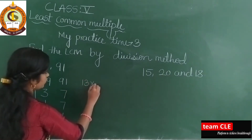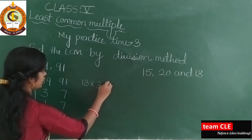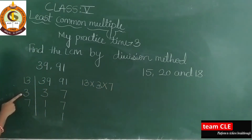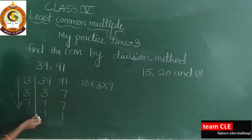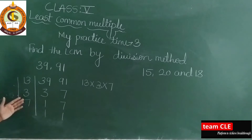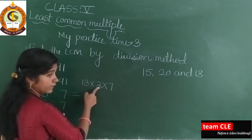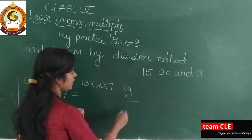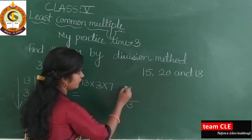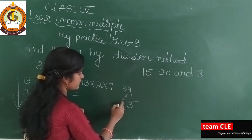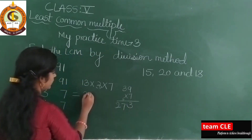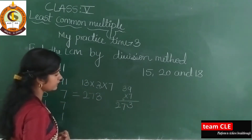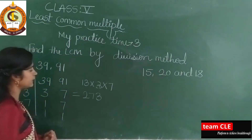Now multiply: 13 into 3 into 7. See here: 13 into 3 into 7. You need to multiply only these digits. If you multiply taking all, you will get the same number only. So take only 13, 3, and 7. 13 threes are 39. 39 sevens: 7 nines are 63, 7 threes are 21, 21 plus 6 is 27 — so 273. 273 will be the LCM of 39 and 91.